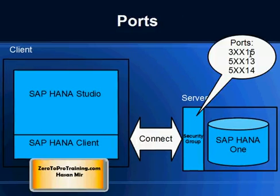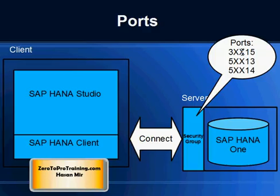The ports are 3XX15, 50013, and 50014. XX is the instance number — there could be multiple databases running on one machine. The instance number here refers to the database instance, not the virtual machine instance. In Amazon Web Services context, instance means virtual machine; in SAP HANA context, instance refers to the database. This is basically a database number which SAP refers to as instance number. We only have one database running, so in our case this is 00, making the port 30015.